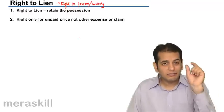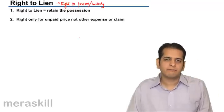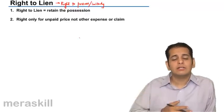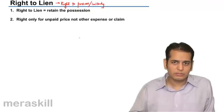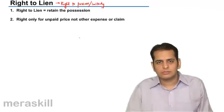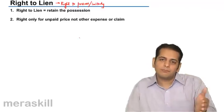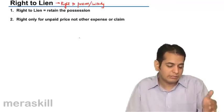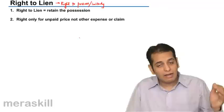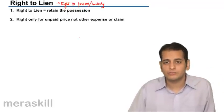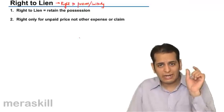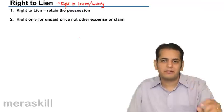Even with an unpaid price, only the proportionate portion applies. For example, if the buyer purchased goods worth ₹5000 and has paid ₹3000, the seller cannot exercise the right of lien over all the goods — only over goods proportionate to the unpaid ₹2000, which is 40%. He must release the remaining 60% worth ₹3000.